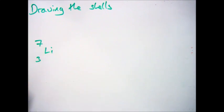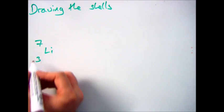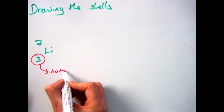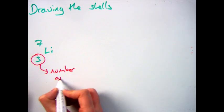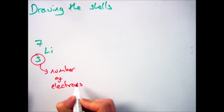So the example we're going to use is lithium. Now we know that the number of electrons is always the bottom number, so we have three electrons for lithium, therefore we have to put three in to our electronic configuration.